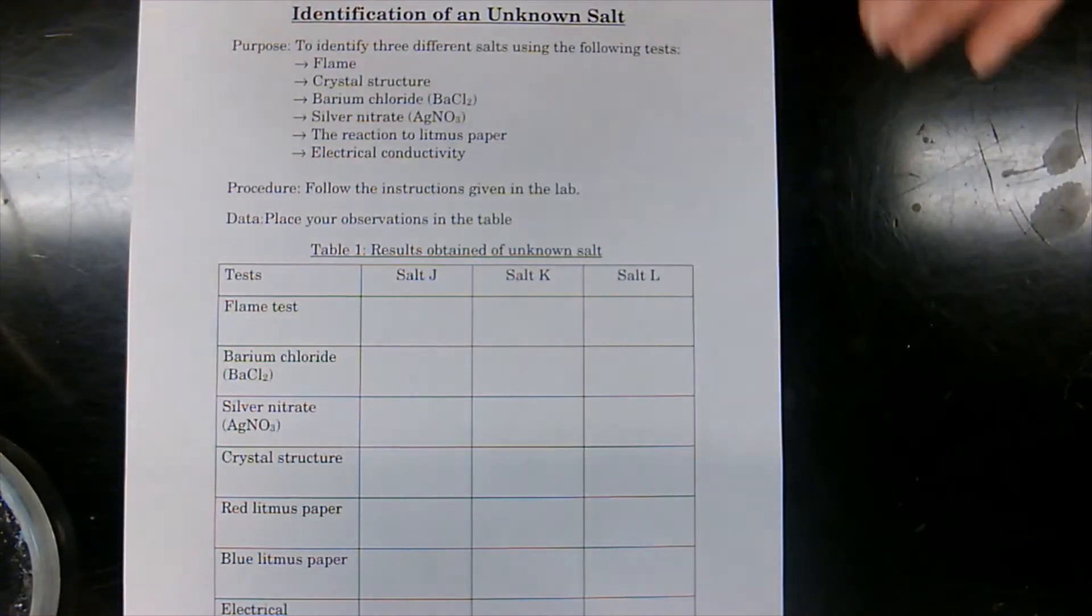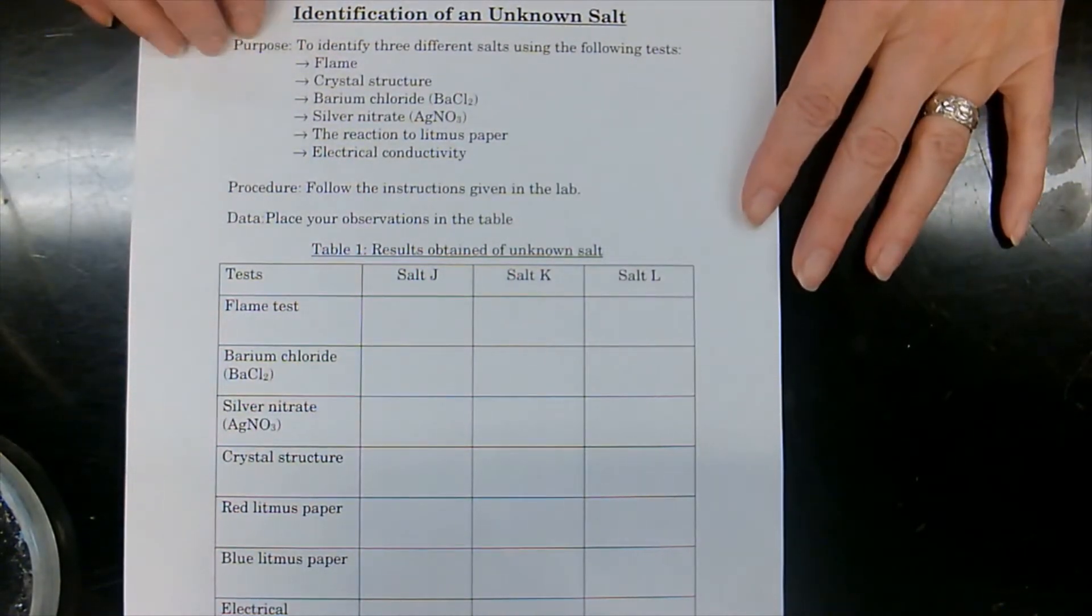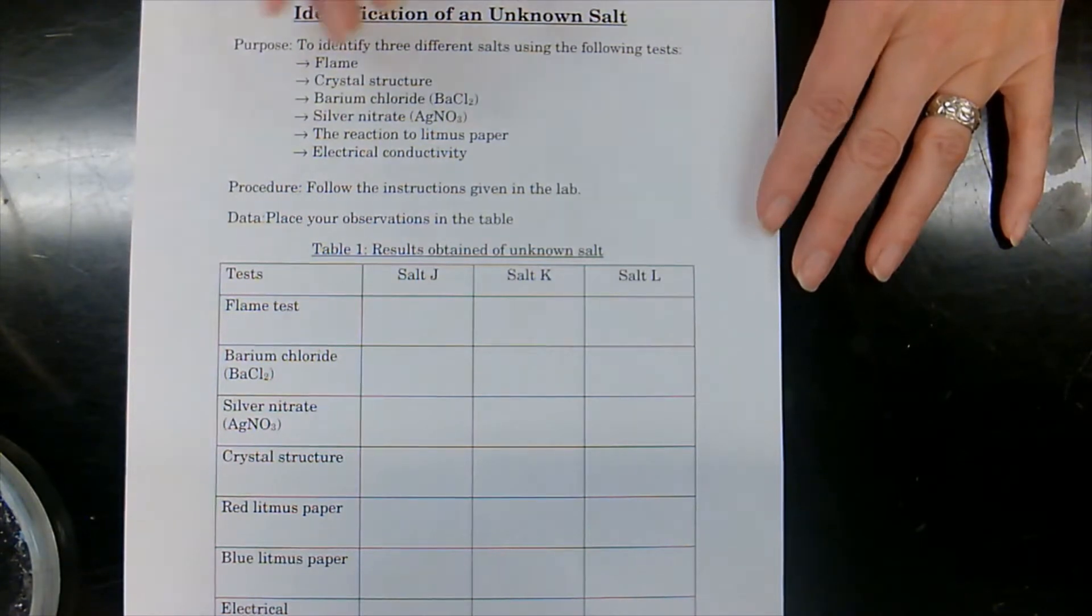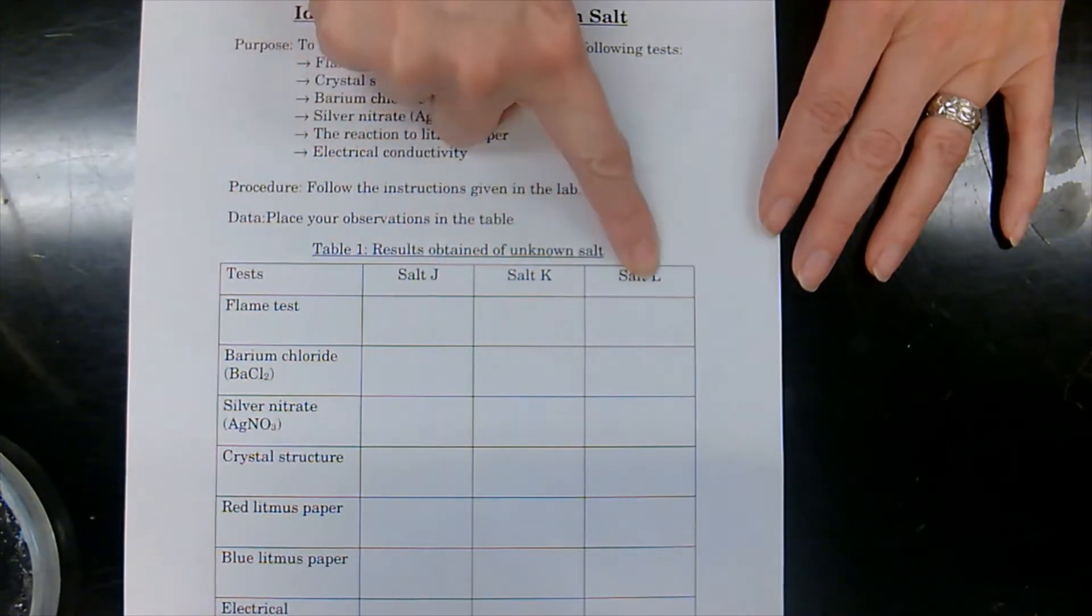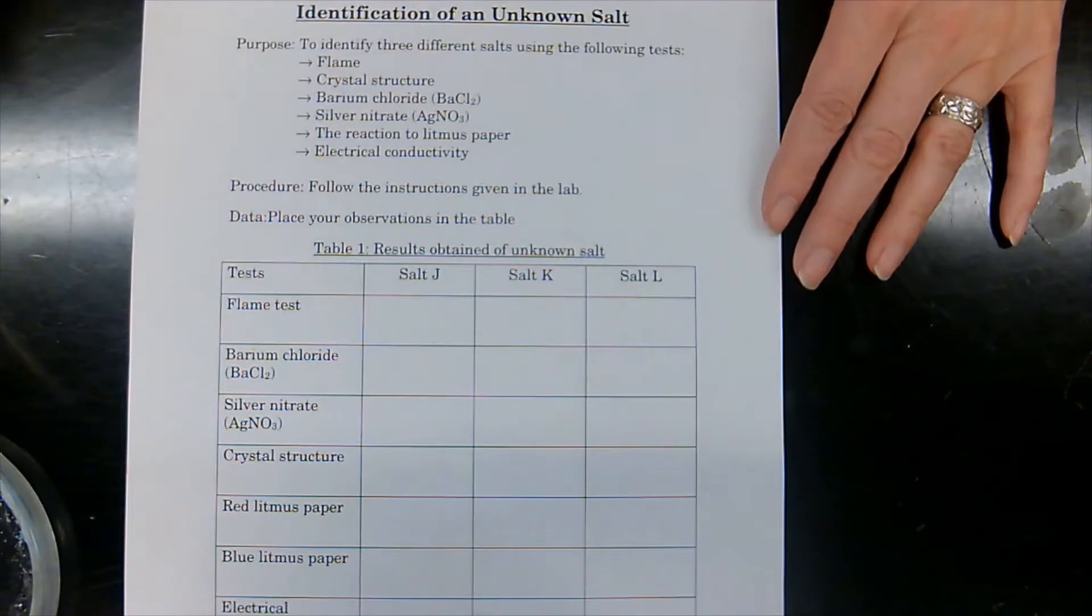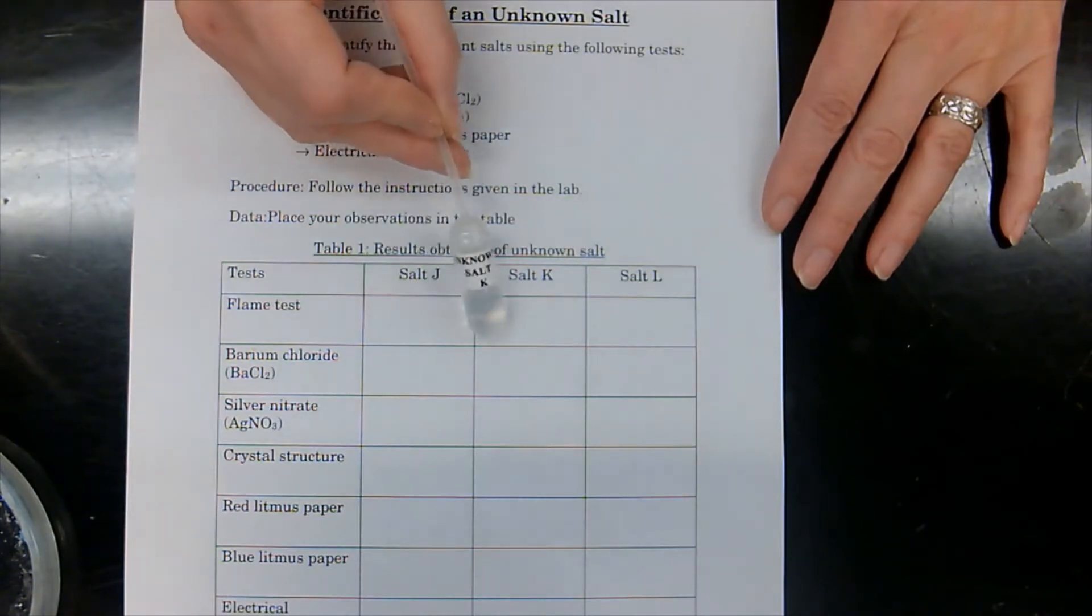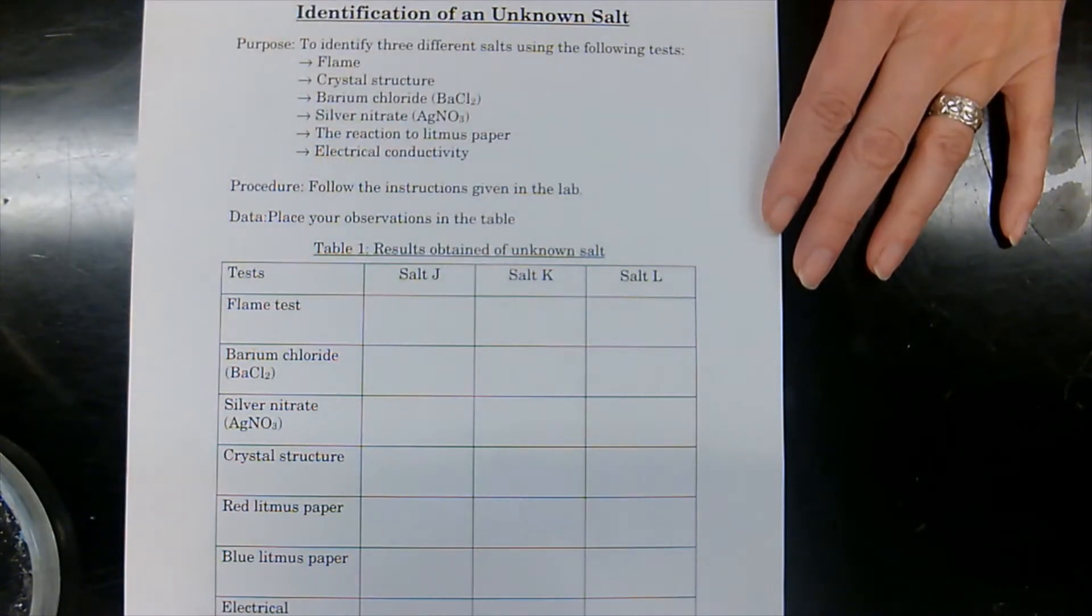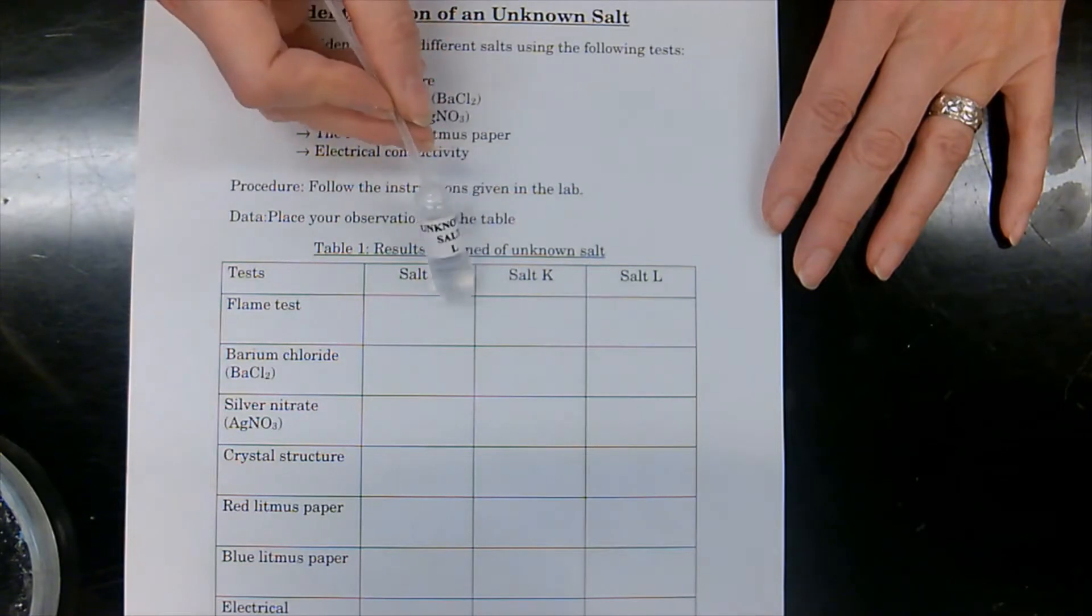All right, so today we're going to be doing another lab. This lab is identification of an unknown salt. So we have three unknown salts: salt J, K, and L. So here we have unknown salt J, unknown salt K, and unknown salt L.